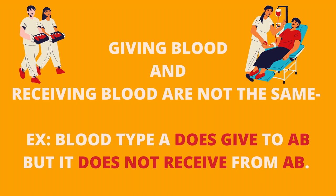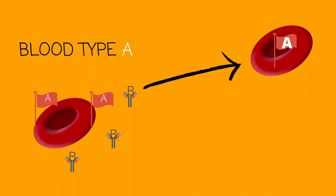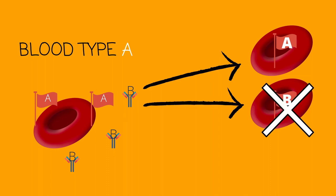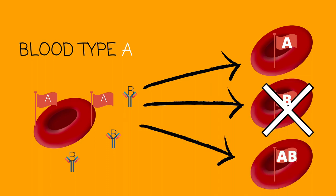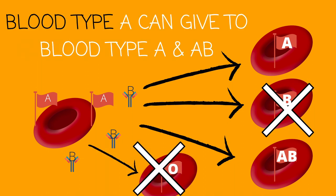We just looked over all the compatibilities with blood receiving. Now let's look at blood giving. Working with blood type A: A will give to those who also represent A and have an A antigen. So can it give to an A? Yes, it can. Can it give to a B? No, it can't. Can it give to an AB? Yes, it can. Can it give to an O? No, it can't. So blood type A can only give to A and AB.